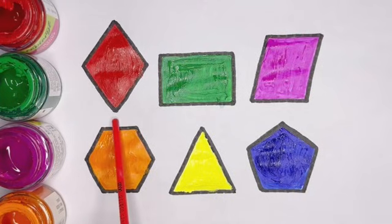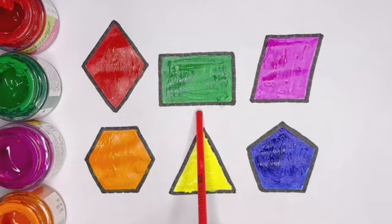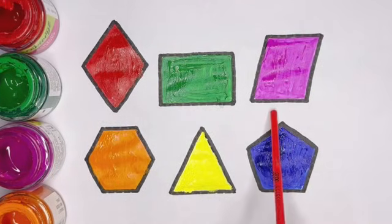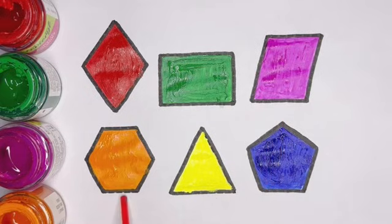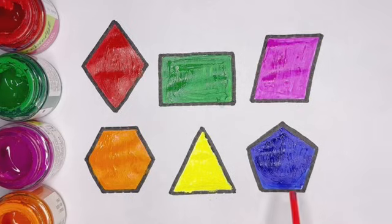Red color, rhombus. Green color, rectangle. Dark pink color, parallelogram. Orange color, hexagon. Yellow color, triangle. Blue color, pentagon.